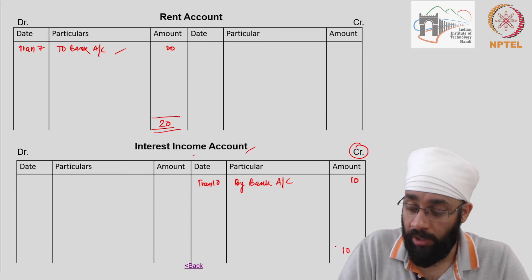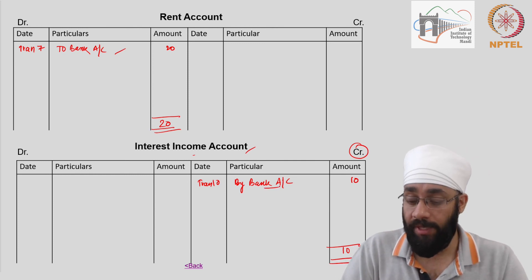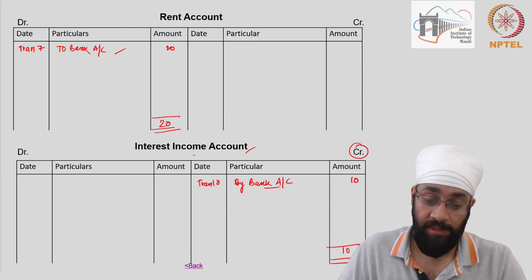Interest income account - what is the total interest that you received during the year? Well, 10. On the credit side there is only one item, you got this money in the bank account. So 10 is the total interest income.